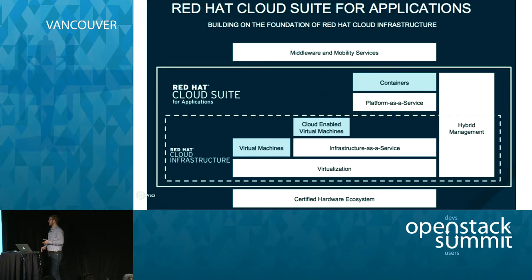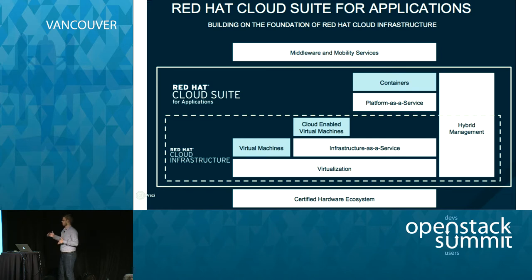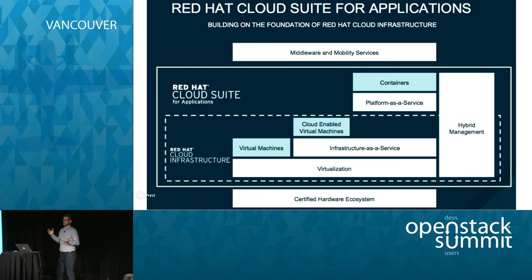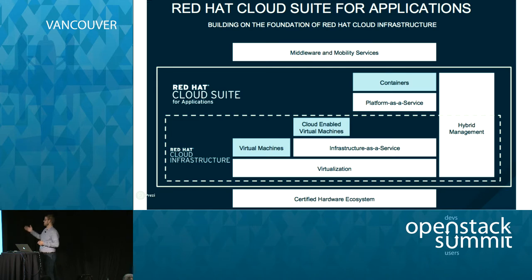What we built is on top of a huge certified hardware ecosystem inherited from building everything on Red Hat Enterprise Linux. We built virtualization and infrastructure-as-a-service: leveraging Red Hat Enterprise Virtualization in the virtualization space and OpenStack for IaaS. We also include hybrid management. Red Hat Cloud Suite for Applications builds on Red Hat Cloud Infrastructure and adds platform-as-a-service to it — supporting mode one traditional applications as VMs, cloud-enabled VMs, all the way up to container-based workloads in a PaaS, plus JBoss middleware and mobility services.